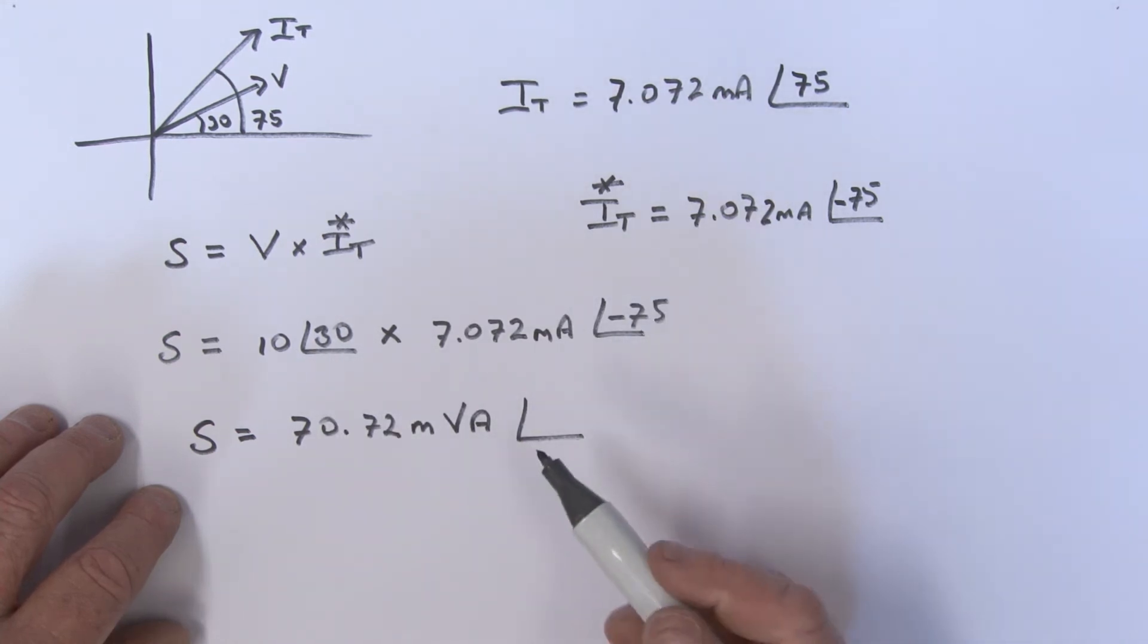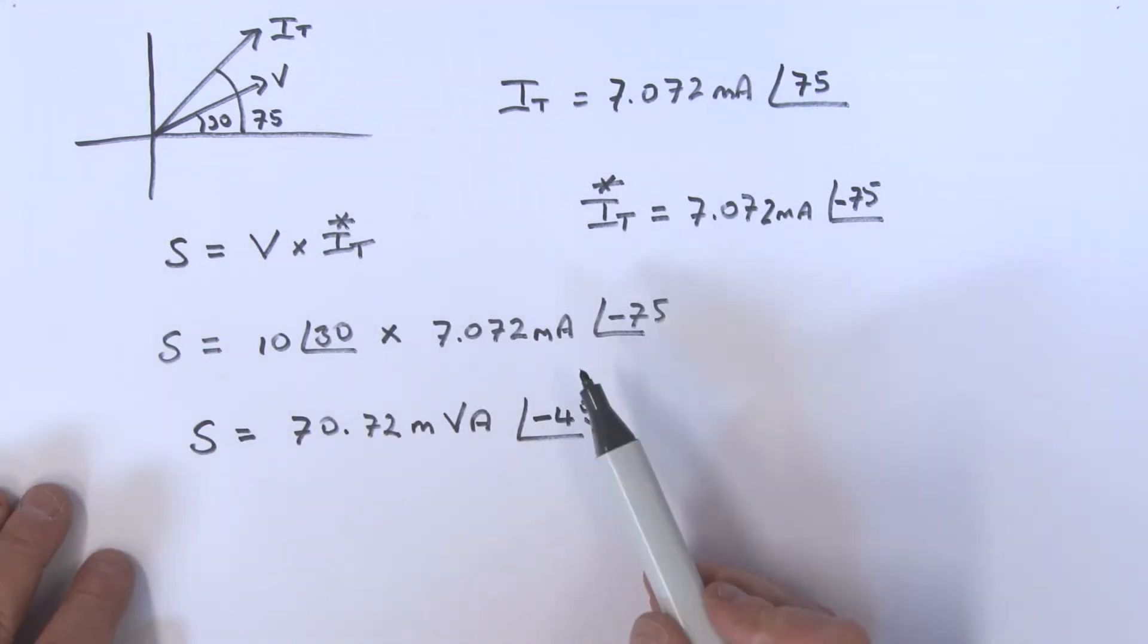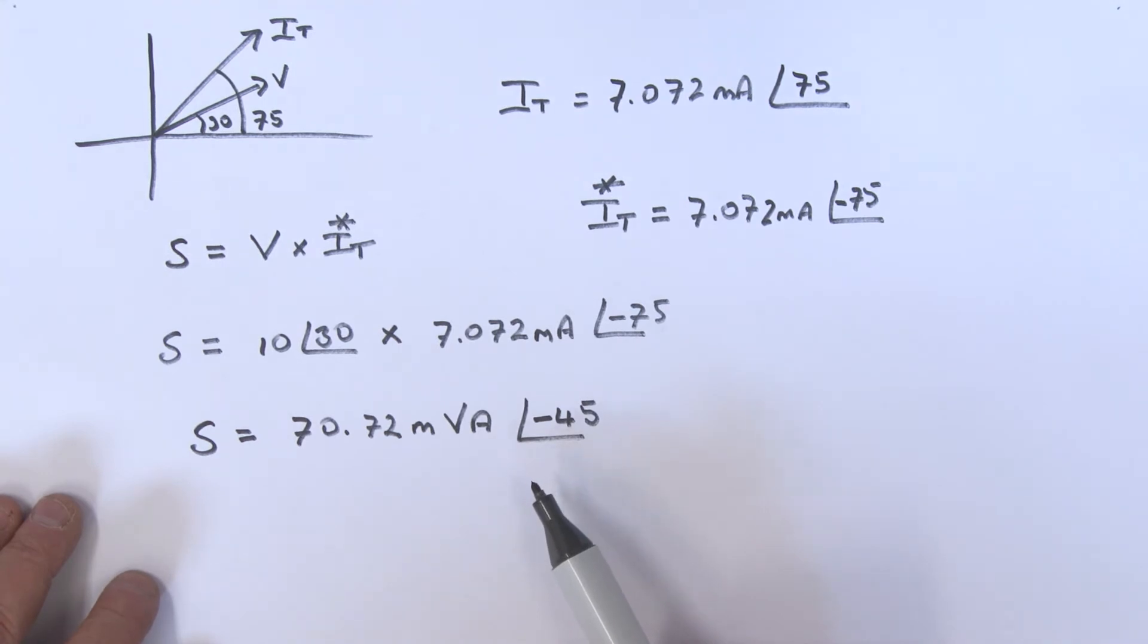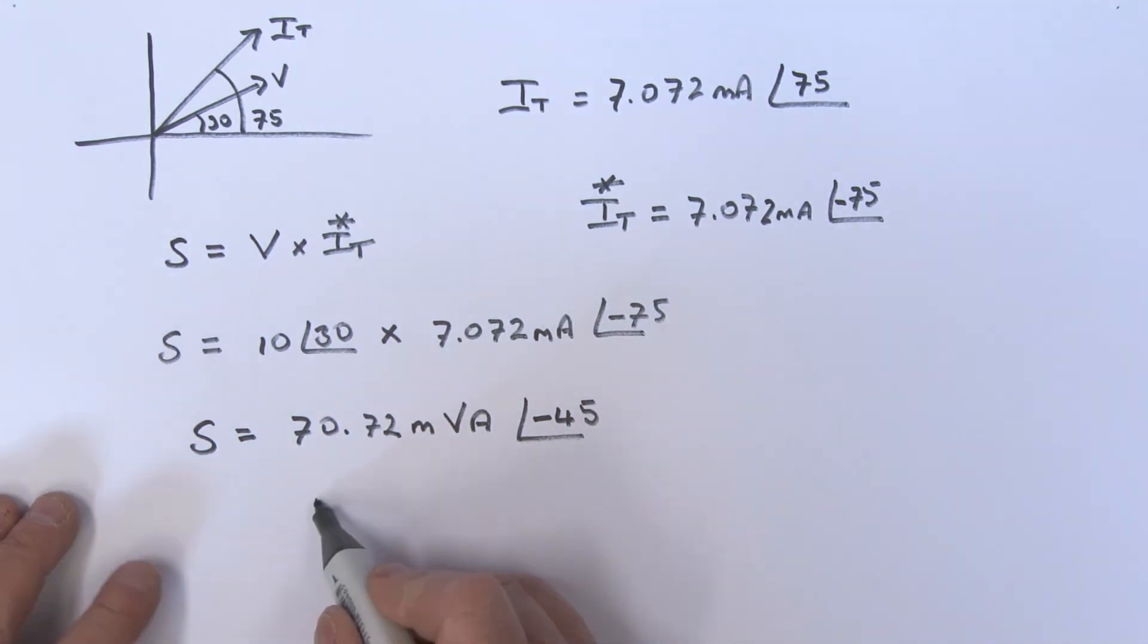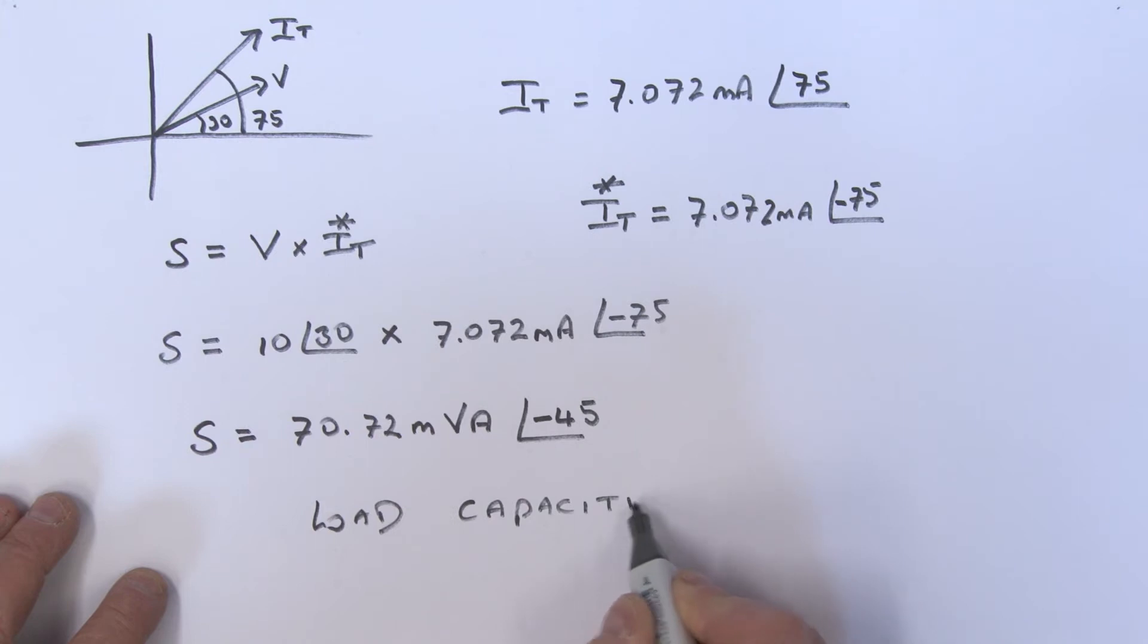And of course the angle over here would be that 30 minus that 75, which gives me a minus 45. Now look, this minus 45, what does that actually mean? Well, look, it really means that the load here - so we can write this down - the load is really a capacitive load.